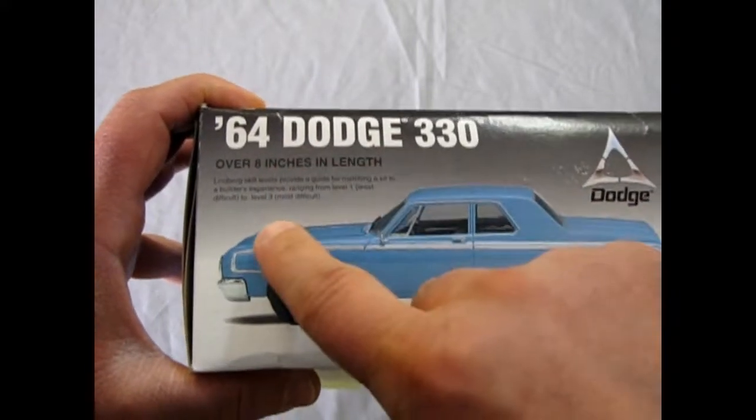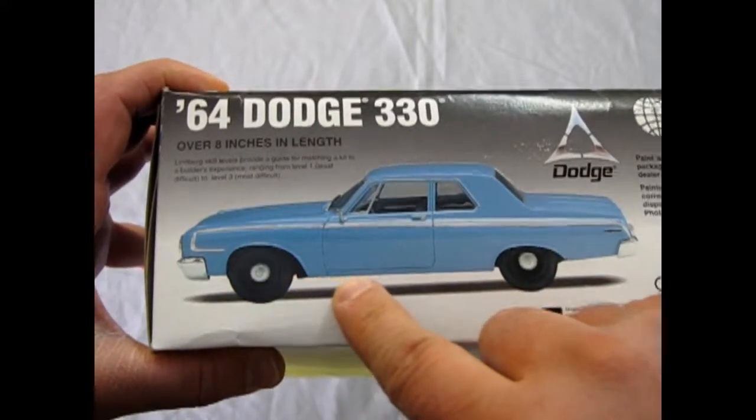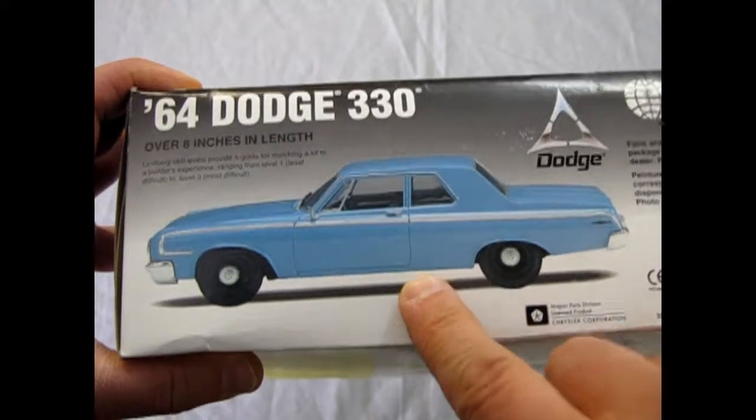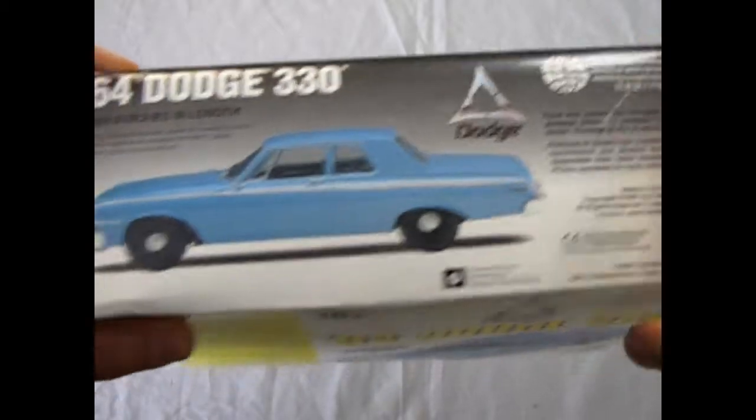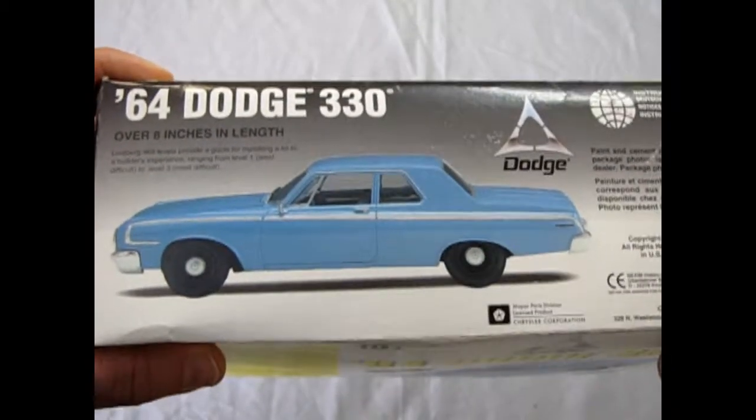And of course, the box looks very much the same on there. Over 8 inches in length. So there's a side view of the car with those dog dish hubcaps, very sleeper type, not flashy.